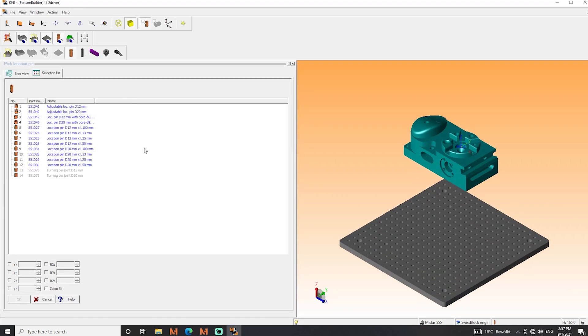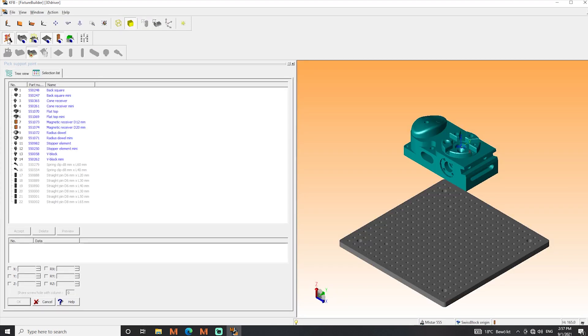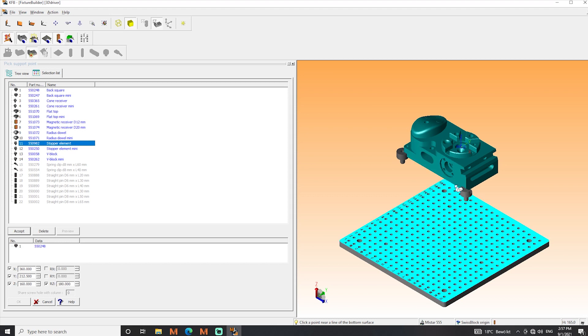Now we will switch to the automatic mode with the little icon up here. We will choose a back square element and position it here and accept the positioning. Then we choose the stopper element and place it right here. We move it over just a bit. Again, accept the position.